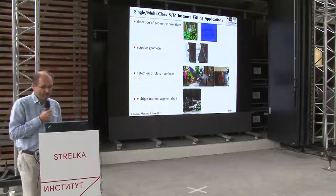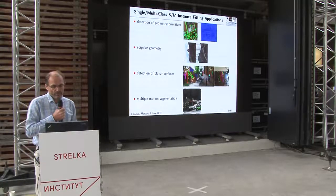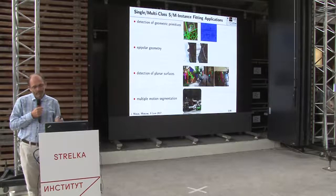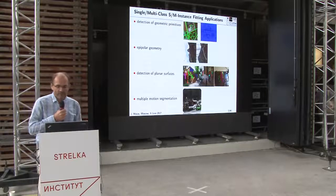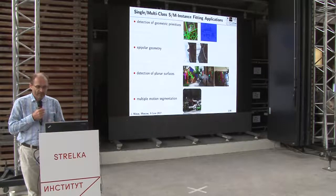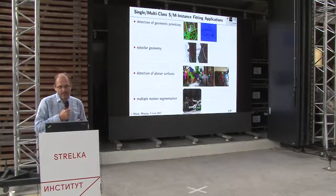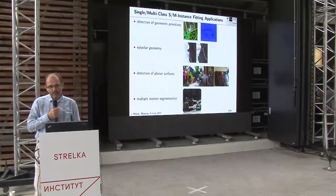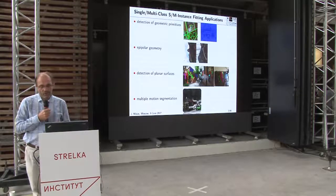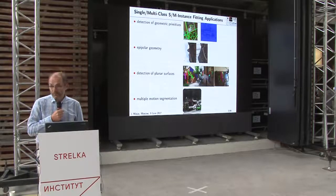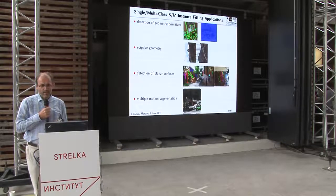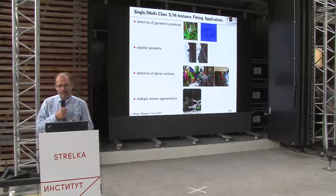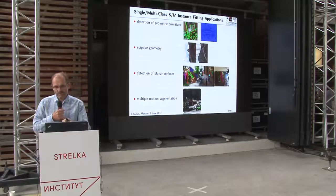Some correspondences, visualized by line segments, are correct and some are incorrect. The problem is to find the epipolar geometry — a relation between the two sets of coordinates capturing the camera movement and 3D structure — and separate correct correspondences from outliers. Another example is detecting planar surfaces from a pair of images, or given tracklets from a video, separating them into multiple rigid moving bodies, each satisfying the epipolar constraint.